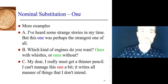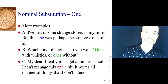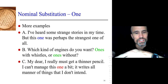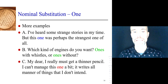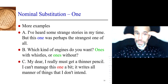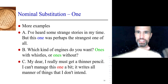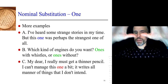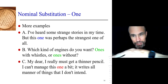Now that you've finished pausing, you'll see that the blue 'one' refers to 'story' — 'but this story was perhaps the strangest one of all time'. We've gone from talking about a story in general to this story. With the green: what kind of engines do you want? Engines with whistles or engines without — so it's engines. My dear, I must get a thinner pencil, I can't manage this one a bit — it writes all manner of things that I don't intend. One means pencil. In all of those cases, you're talking about two different things.